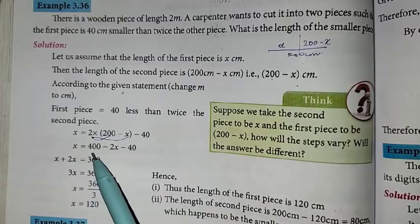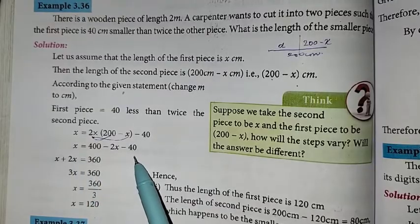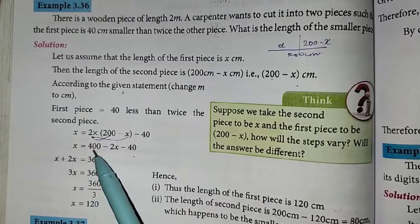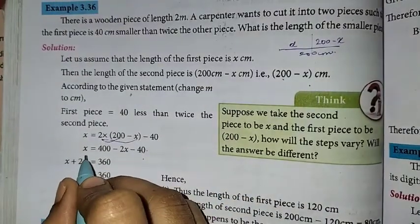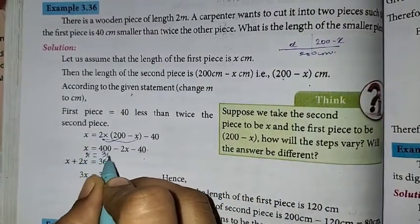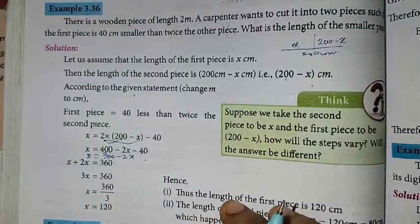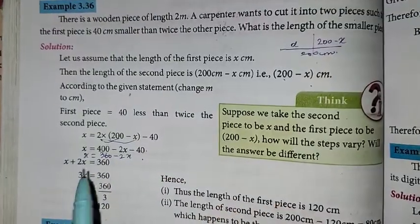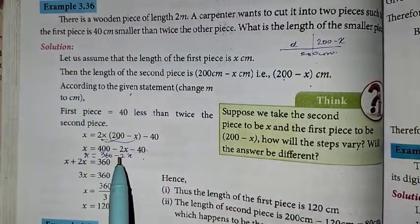x is equal to 400 minus 2x minus 40, which simplifies to x is equal to 360 minus 2x. So we move the variable terms together by adding 2x to both sides.